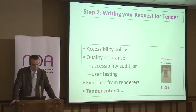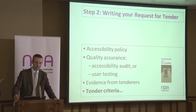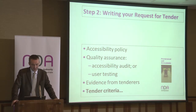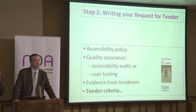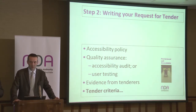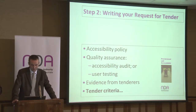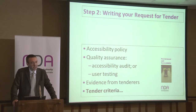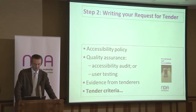The next step in the process is writing a request for tender. If you have an accessibility policy — such as an accessibility information policy — include that in your request for tender and refer to it. You might want to do quality assurance, have regular accessibility audits while the building or website is being created, or do user testing — you can decide how you're going to make sure what you get will be properly accessible. You also want to get evidence from tenderers to prove that it's accessible.